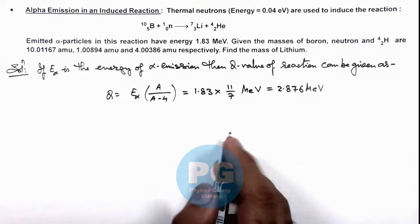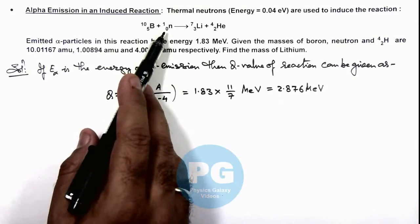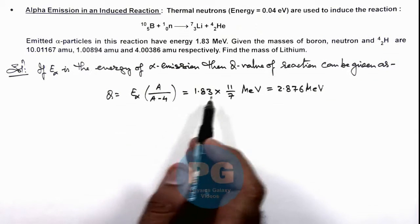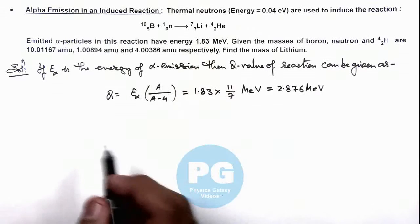Here we are neglecting the initial energy of thermal neutron which is only 0.04 eV, negligible compared to the evolved energy of alpha particle.